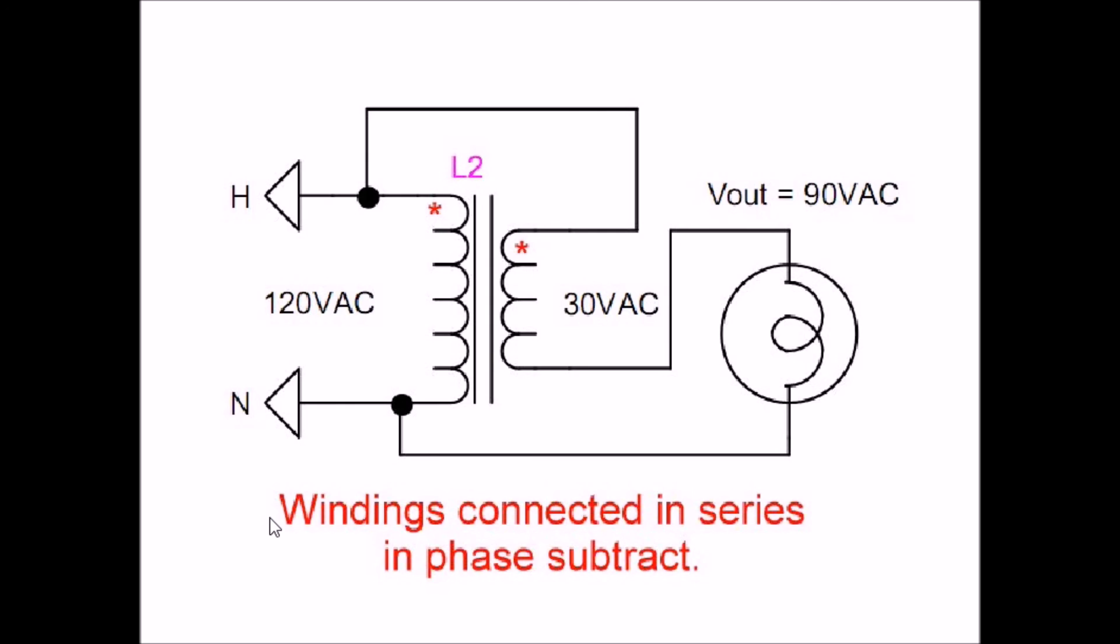Remember, in the case of connecting transformer windings in series, if they are in phase the voltages subtract. If they are 180 degrees out of phase they will add. This is a brief introduction to buck and boost transformer connections. Thanks for listening, visit my website at www.bristolwatch.com.